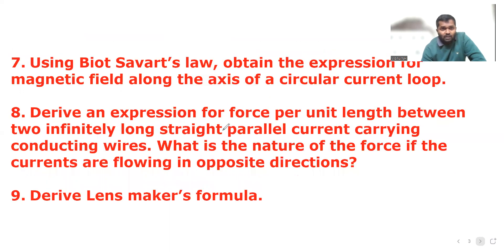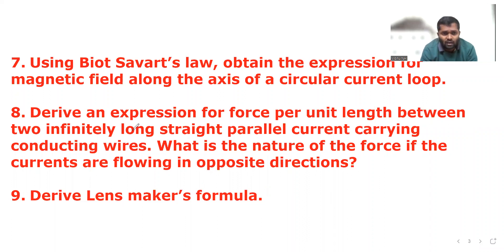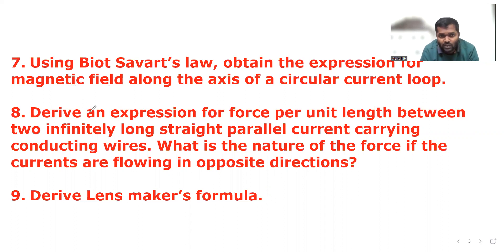The seventh question: using Biot-Savart law, obtain the expression for magnetic field along the axis of a circular current loop. This is again one of the important questions you have to prepare without fail. Give first priority to this question from the moving charges and magnetism chapter.